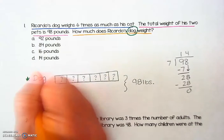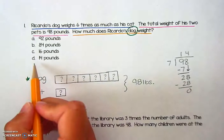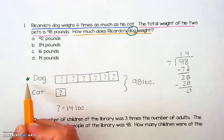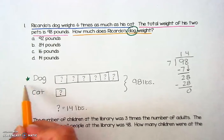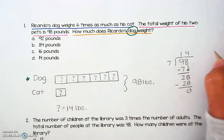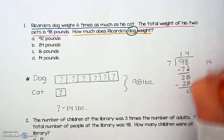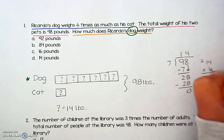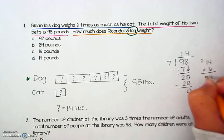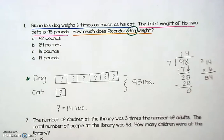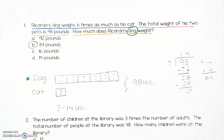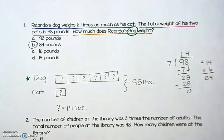So the cat is 14 pounds. Now if you look, that's one of the distractor answers. We have to remember that I want the weight of the dog. So now I need to take those 14 pounds and multiply by six. Six times four is 24. Six times one is six, plus two is eight. That tells me that Ricardo's dog weighs 84 pounds, which is one of my answer choices right here.